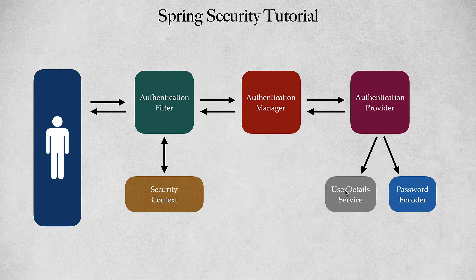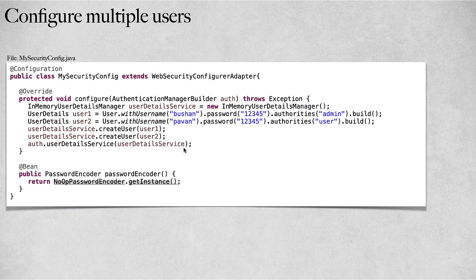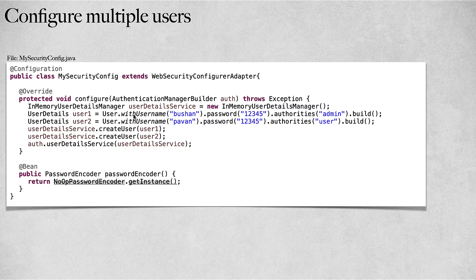InMemoryUserDetailsManager is actually an implementation of the UserDetailsService. Now let's look at the development steps. Inside the MySecurityConfiguration class we are going to override the configure method, which takes the AuthenticationManagerBuilder as a parameter. Inside this we are going to create an instance of InMemoryUserDetailsManager. We will then call the withUsername method and configure the username as well as the password.